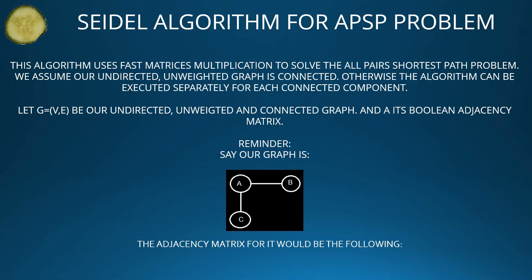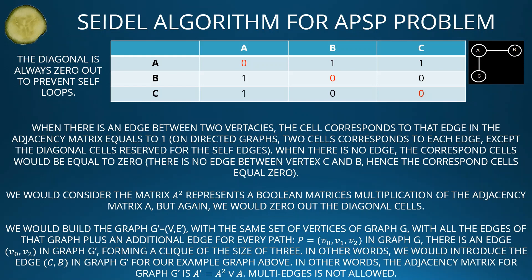Let graph G = (V, E) be our undirected, unweighted, and connected graph, and let A be its boolean adjacency matrix. As a reminder, the diagonal is always zeroed out to prevent self-loops. When there is an edge between two vertices, the cell corresponding to that edge in the adjacency matrix equals 1. On undirected graphs, two cells correspond to each edge. When there is no edge, the corresponding cell equals zero — for example, there is no edge between vertex C and vertex B, so those cells equal zero.